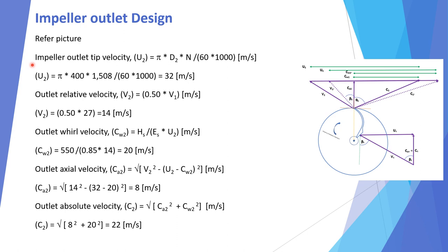Inlet blade angle at mean: tan(β1) = U1 / Ca1, giving β1 = 32°. Inlet blade angle at root: tan(β1_root) = U1_root / Ca1, giving 36°. Inlet blade thickness = 10 mm. For the outlet: impeller outlet tip velocity U2 = π × D2 × N / (60 × 1000) = 32 m/s. Outlet relative velocity V2 = 0.5 × V1 = 14 m/s. Outlet whirl velocity: Cw2 = Hs / (Es × U2) = 20 m/s.